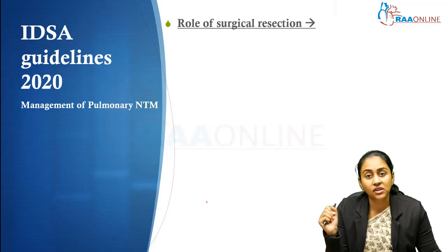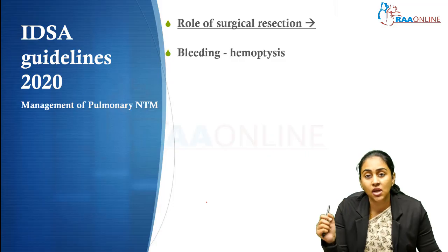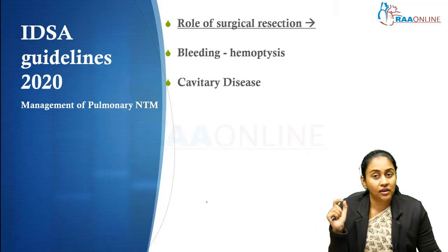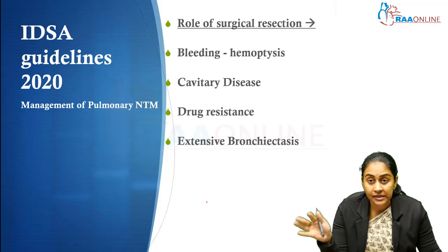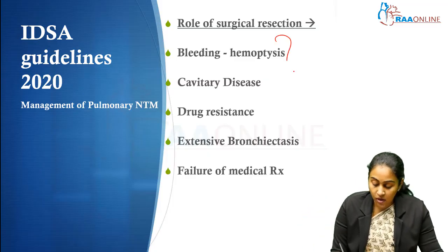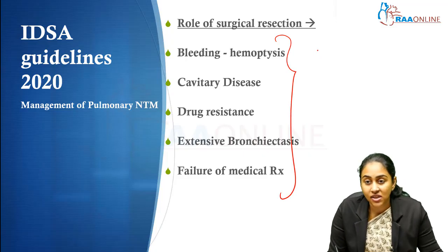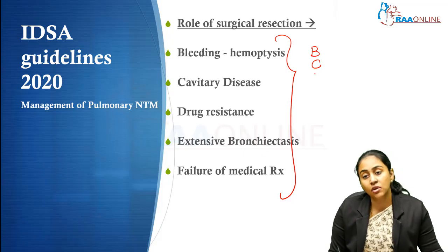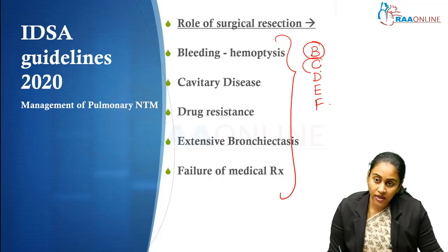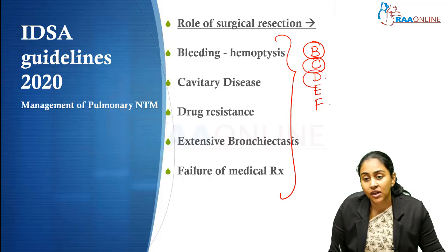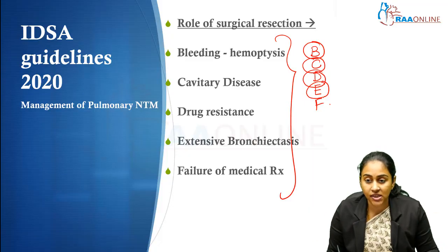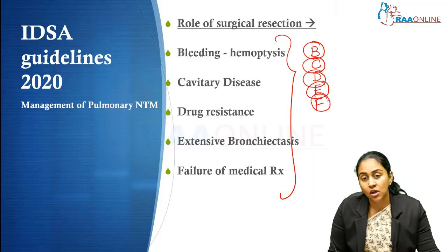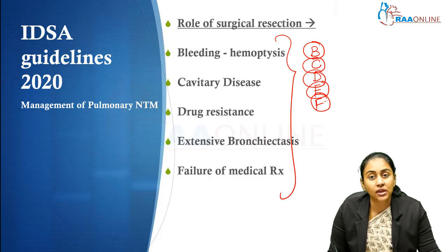What is the role of surgical resection? Surgical resection is done only when there is bleeding, cavity disease, drug resistance, extensive bronchiectasis, or failure of medical treatment. The indications for surgical resection in pulmonary NTM infections follow a BCDEF mnemonic — skipping A: B for Bleeding (severe hemoptysis), C for Cavity (extensive), D for Drug resistance, E for Extensive disease (extensive bronchiectasis), and F for Failure of medical management.